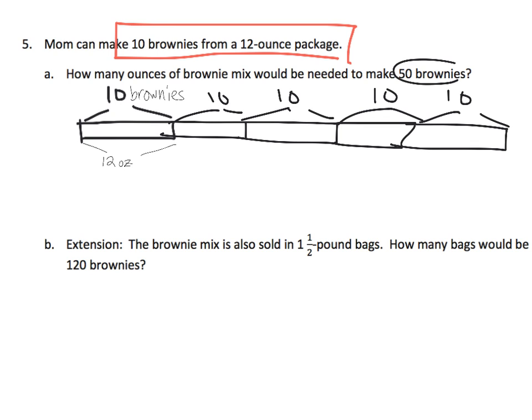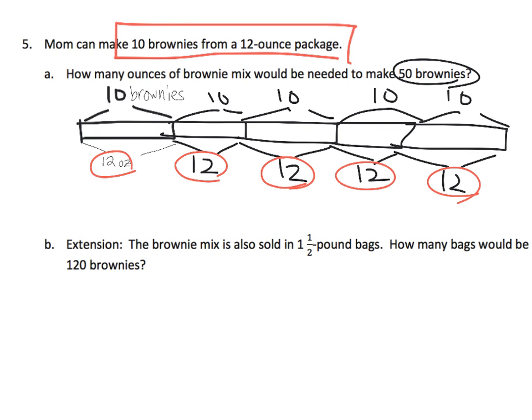Which means how much mix are we going to need? We're going to need another 12, another 12, another 12, and another 12. So, all together, we're going to need one, two, three, four, five copies of 12. So, five times 12 equals 60 ounces of brownie mix is going to be needed.